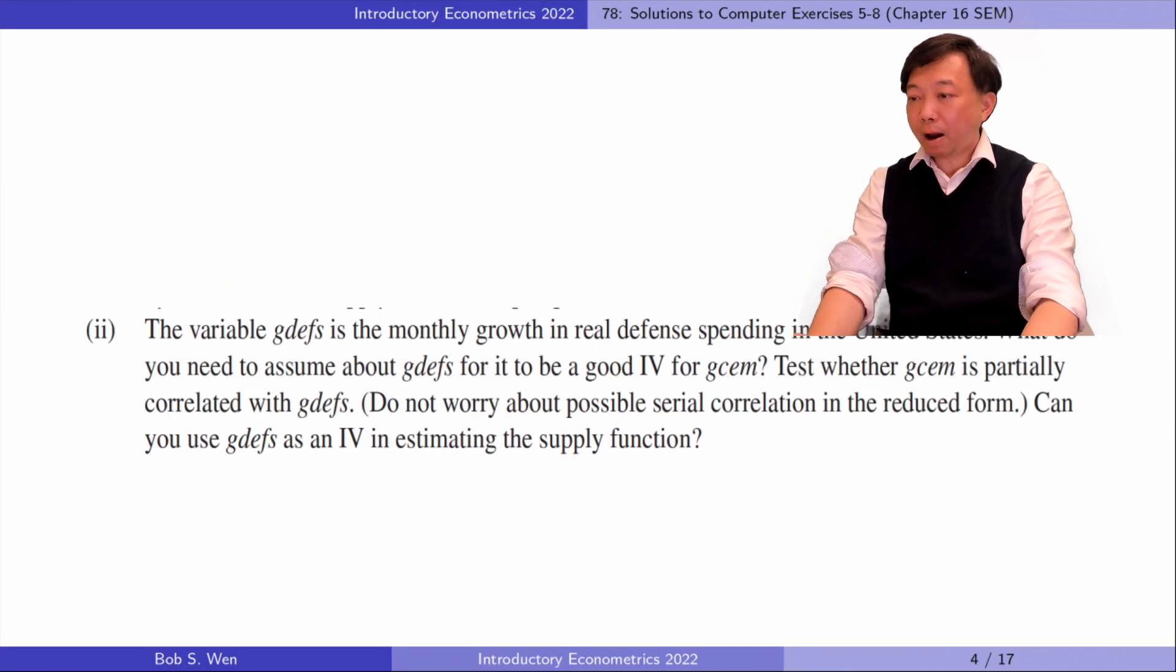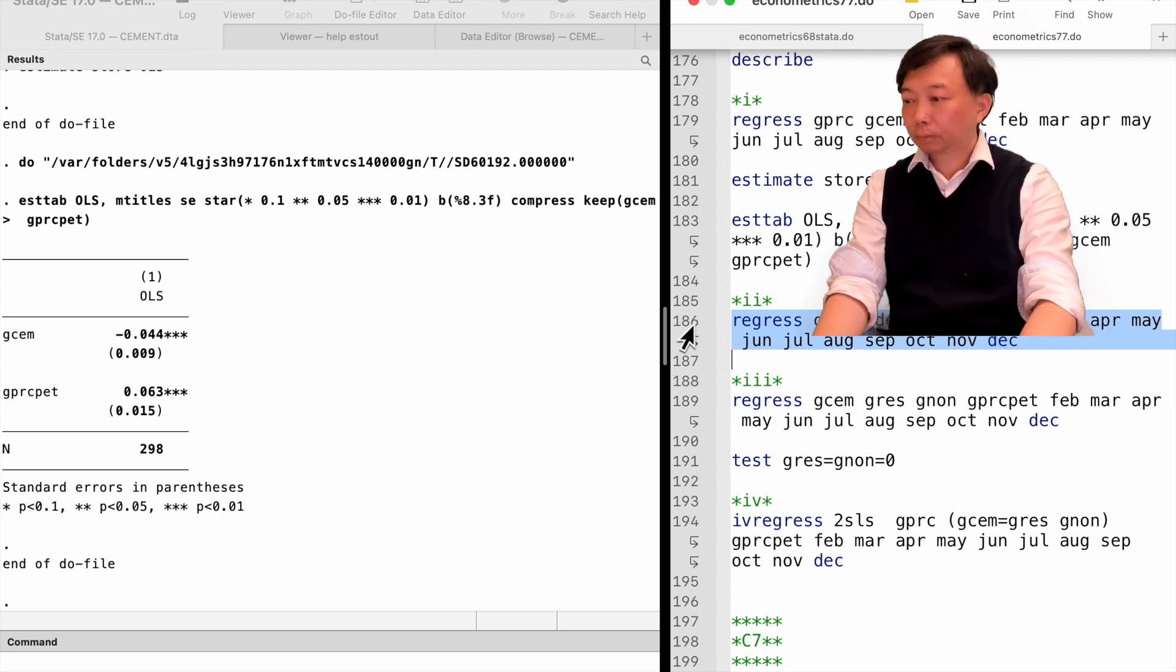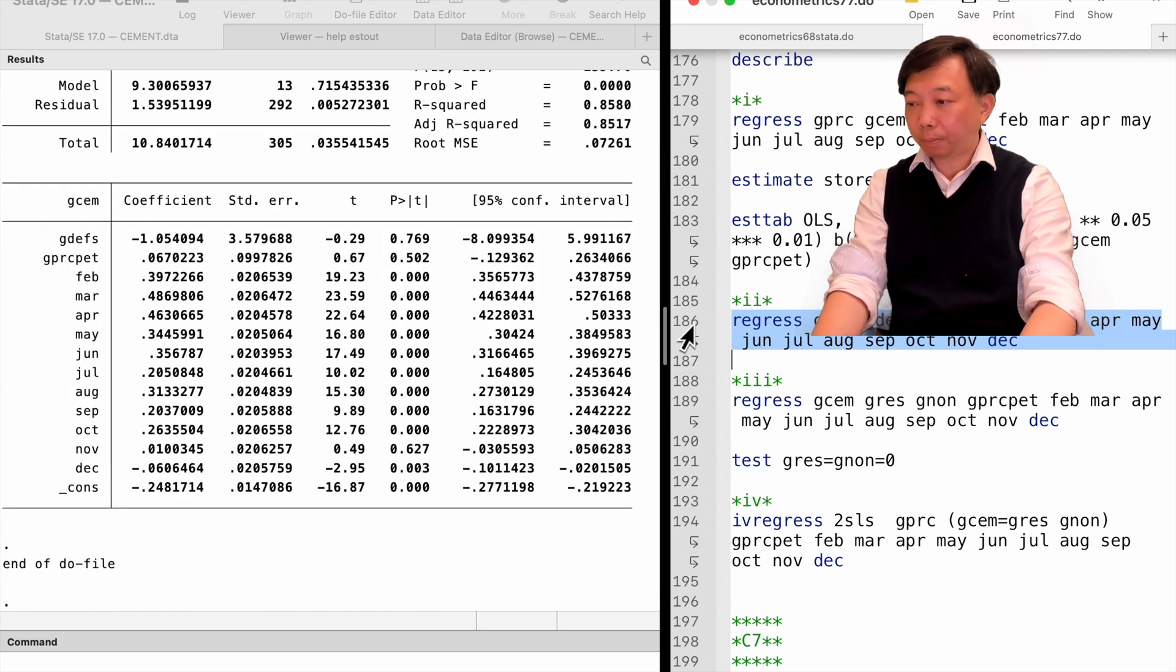In part 2, the variable G-DEFENSE is the monthly growth in real defense spending in the United States. What do you need to assume about G-DEFENSE for it to be a good IV for G-CEM? Test whether G-CEM is partially correlated with G-DEFENSE. Can you use G-DEFENSE as an IV in estimating the supply function? In the first stage regression, we regress G-CEM on G-DEFENSE and other exogenous variables in the model. The estimate of G-DEFENSE is not statistically significant at any reasonable level. The variable G-DEFENSE fails to satisfy the instrument relevance requirement, and therefore it is not a valid IV for G-CEM.